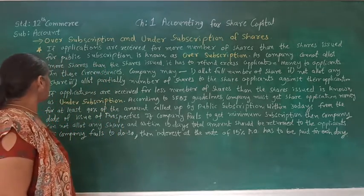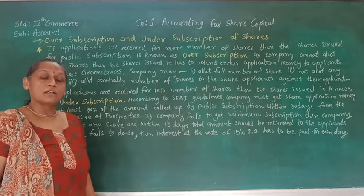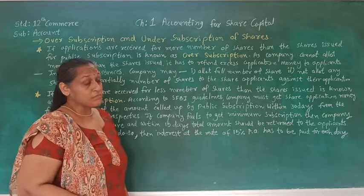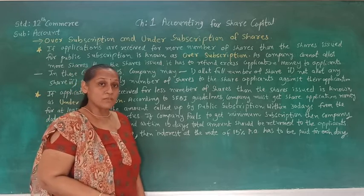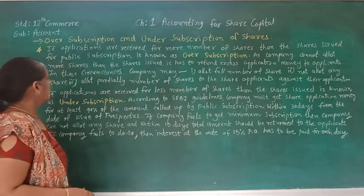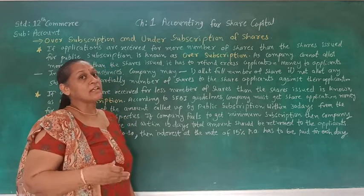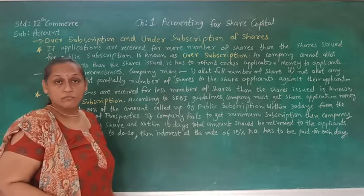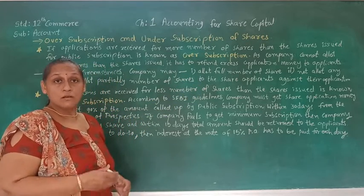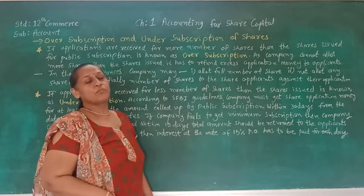Since the company cannot allot more shares than the shares issued, it has to refund excess application money to the applicant. The company cannot retain excess money with them. In the case of over subscription, the company can handle the procedure in three ways. The first is to allot the full number of shares — so some applicants are given the full number of shares they applied for.